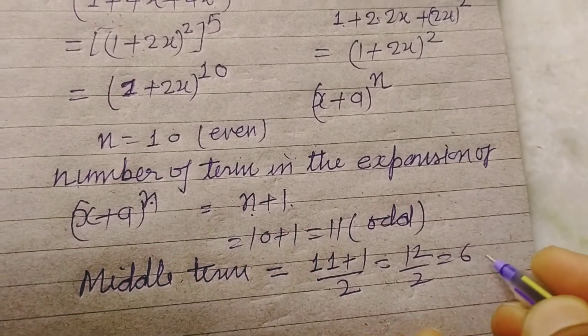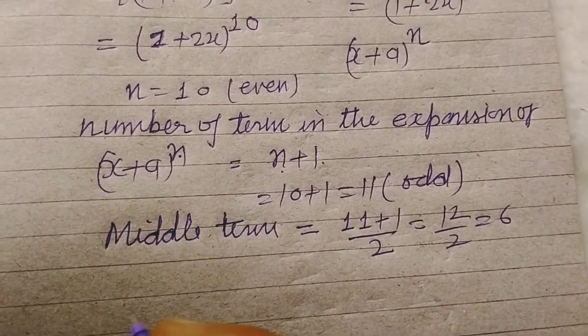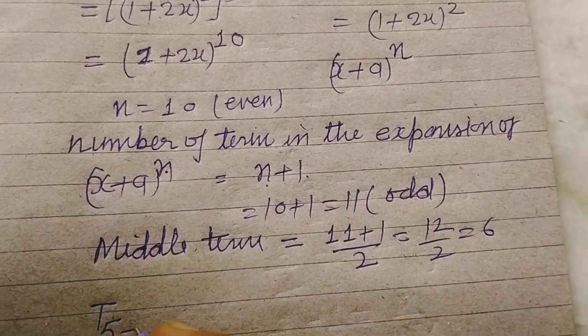Middle term will be 11 plus 1 over 2. This is 12 by 2, so 6th term. So 6th term will be middle term. So we can write 6th term as 5 plus 1.